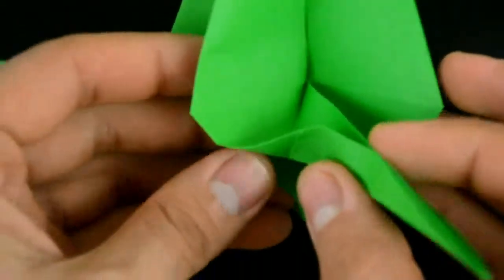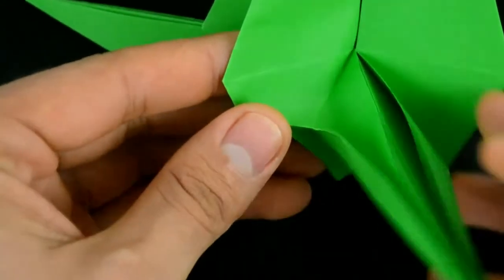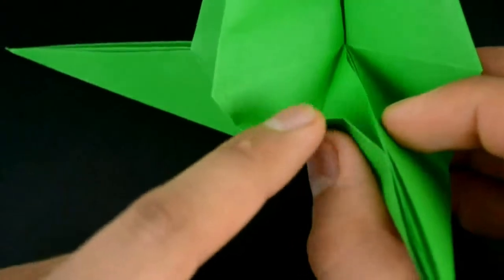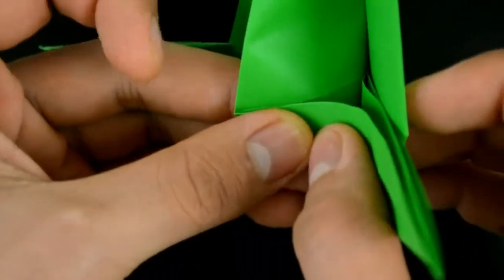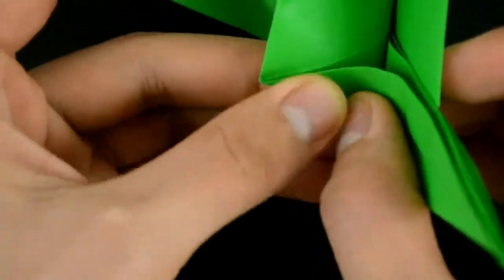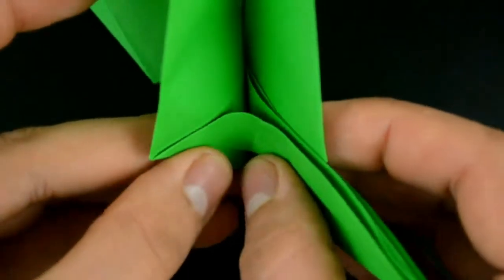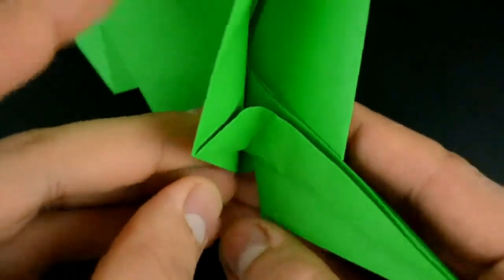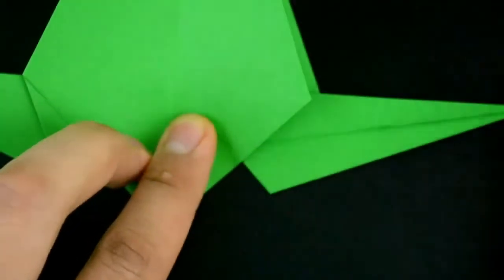Now on the other side, we need to do exactly the same. But now let's fold the same edge to this line on the middle. Then just close the paper and reinforce the creases.